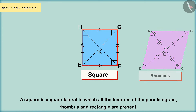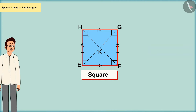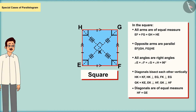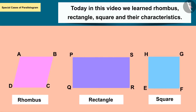The characteristics of a square are: all sides equal, opposite sides parallel, all angles right angles, diagonals perpendicular to each other, diagonals equal and bisecting each other. Today in this video we learned about rhombus, rectangles and squares along with their characteristics. In the next video we will see some examples based on these.